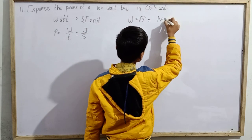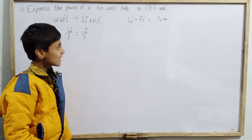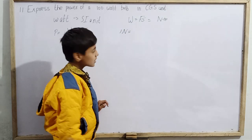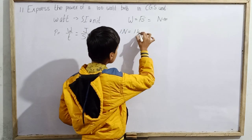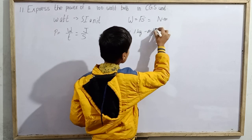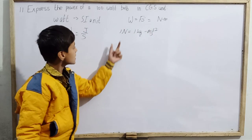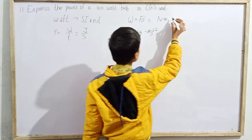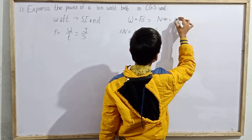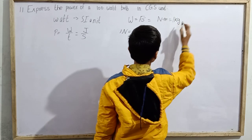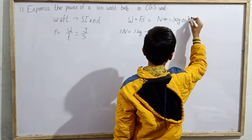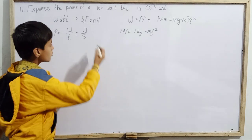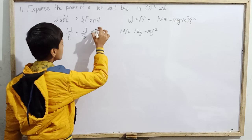What is the unit of force? Newton. What is the unit of displacement? Meter. So 1 joule equals 1 kg·m²/s². This combination is called 1 joule.